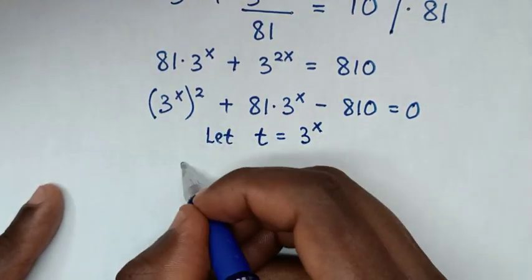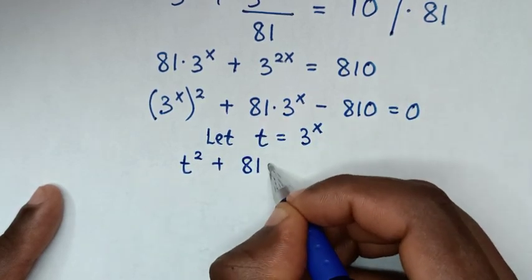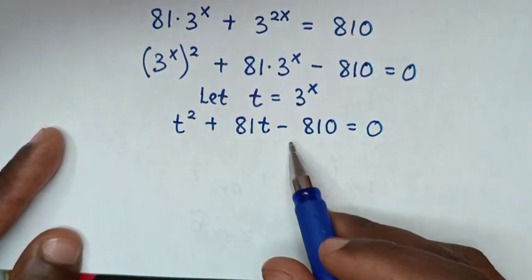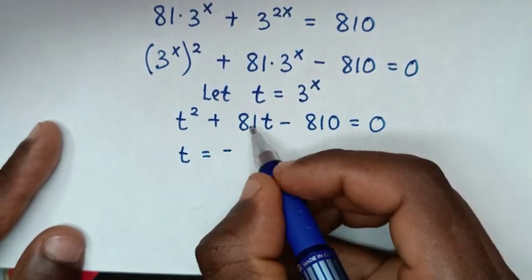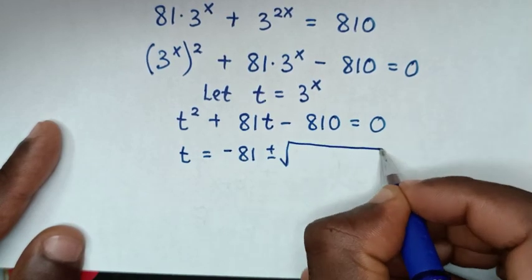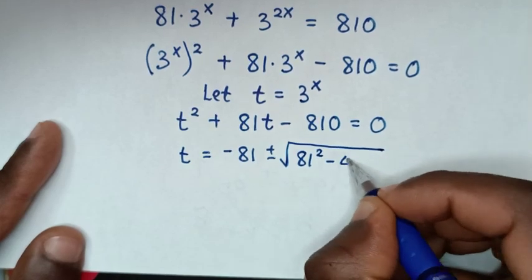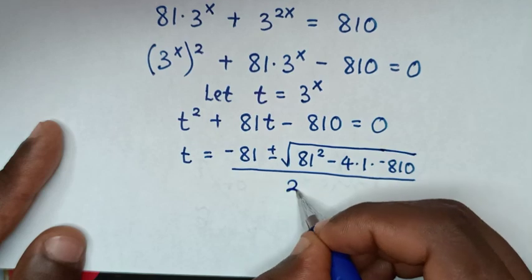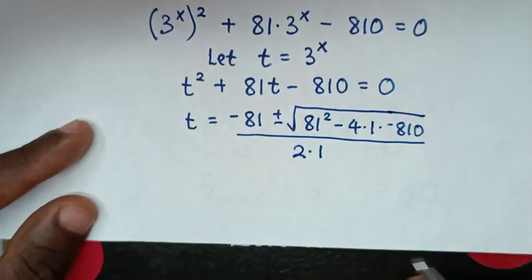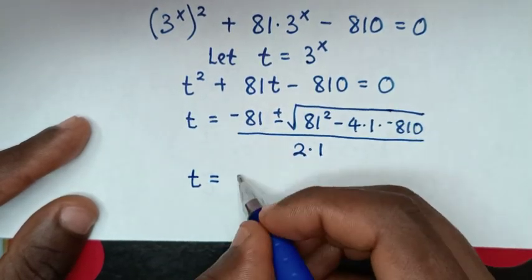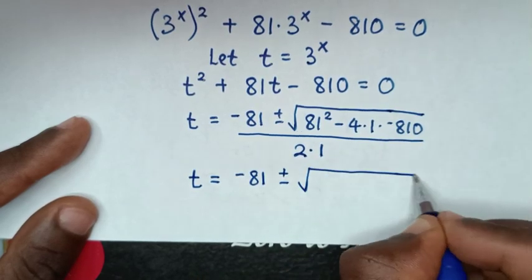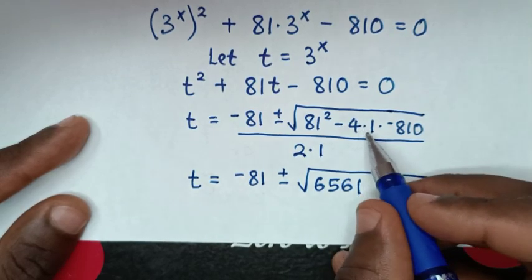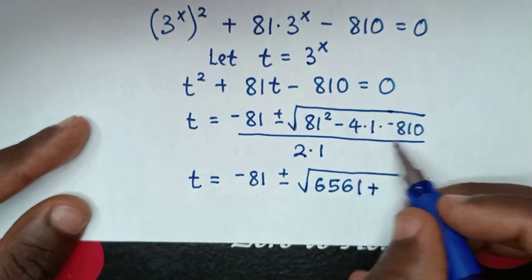Then it will be t squared plus 81t minus 810 is equal to 0. We solve this quadratic equation by the quadratic formula. So t is equal to negative b, which is negative 81, plus or minus square root of b squared, which is 81 squared, minus 4 times a, which is 1, times c, which is negative 810, all over 2 times a, which is 1.